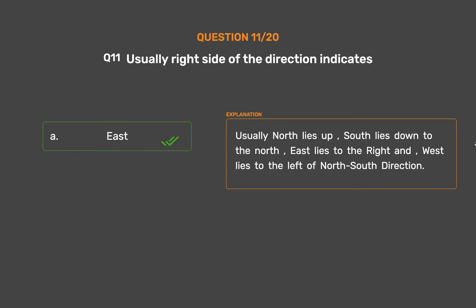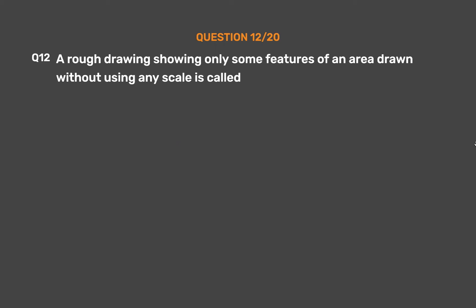Usually north lies up, south lies down, east lies to the right, and west lies to the left of the north-south direction.